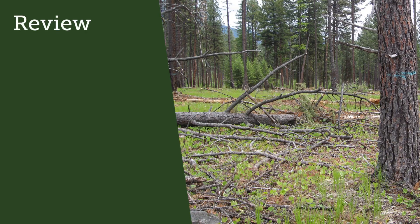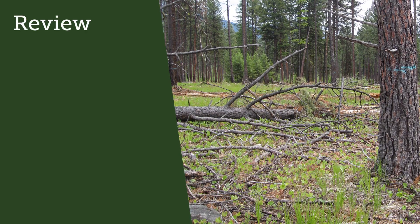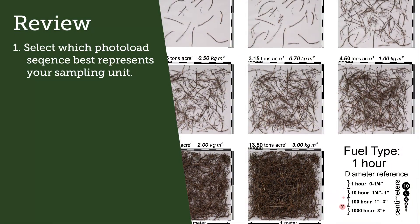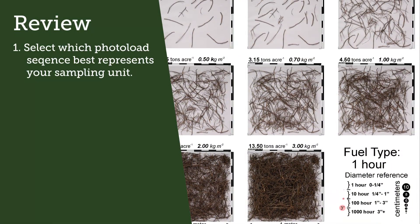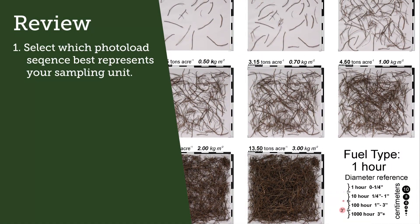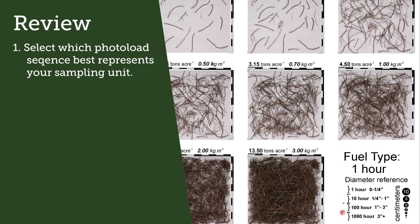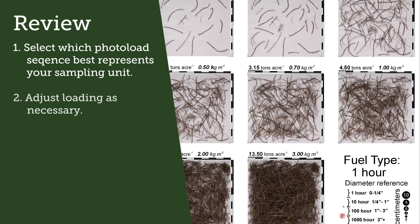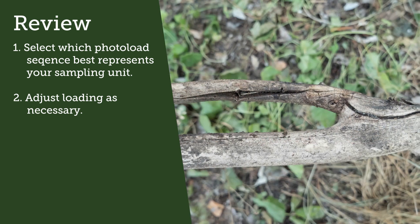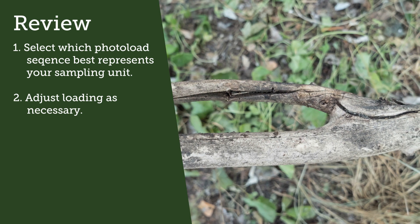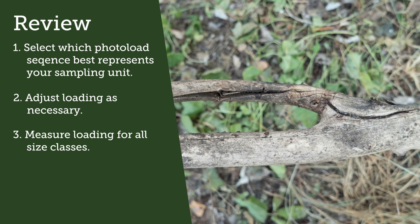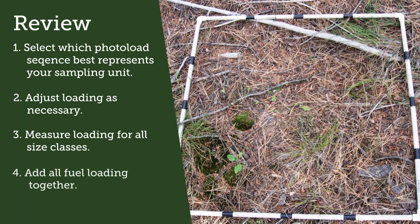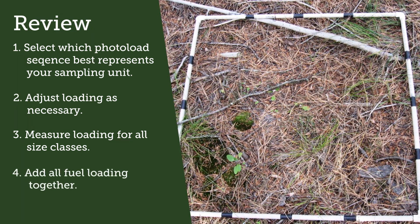To review — to determine loading of dead and downed fuel: first, start with one-hour fuels and select which photo load sequence best represents your sampling unit's one-hour loading using visual estimation or the measurement technique. Second, adjust loading as necessary depending on differences in average diameter. Third, measure loading for all size classes. Fourth, add all fuel loadings together.